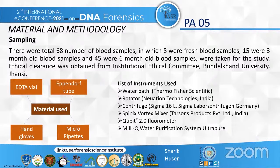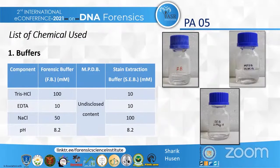For the materials: a total of 68 blood samples were taken for the study, all collected from healthy individuals. Of these, 50 were three-month-old blood samples, 45 were six-month-old blood samples, and 8 were fresh blood samples. Ethical approval was obtained. The buffers used in the study were the forensic buffer and the MPDB buffer; the contents of the MPDB buffer are undisclosed as it is under patent by Dr. Pankaj Srivastava, and further studies are ongoing with this buffer.